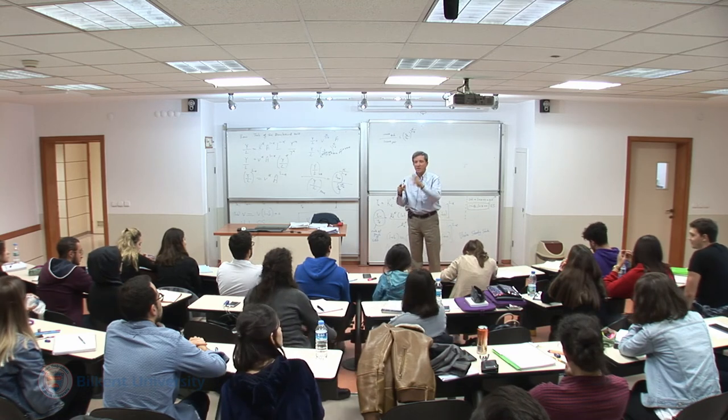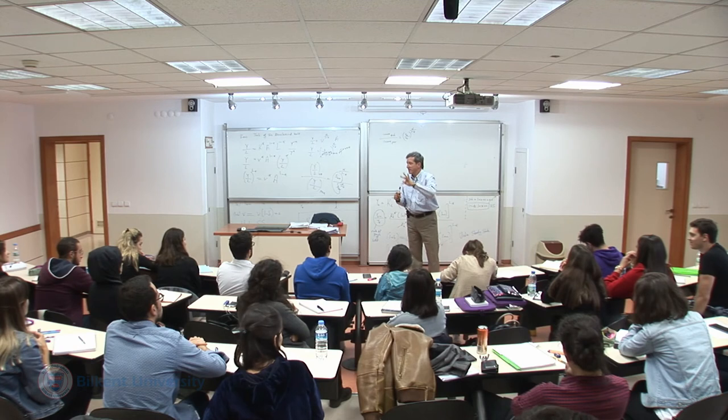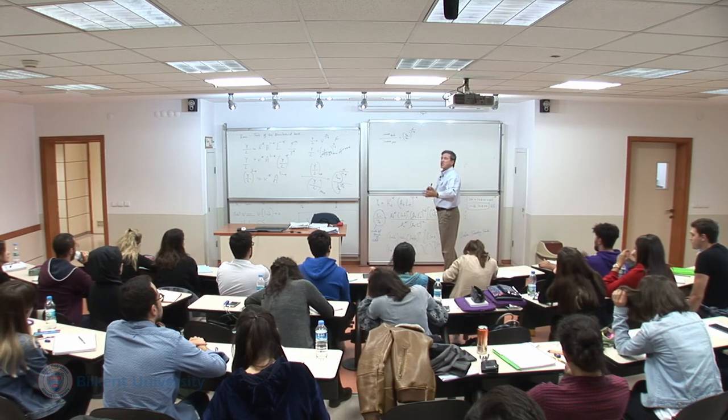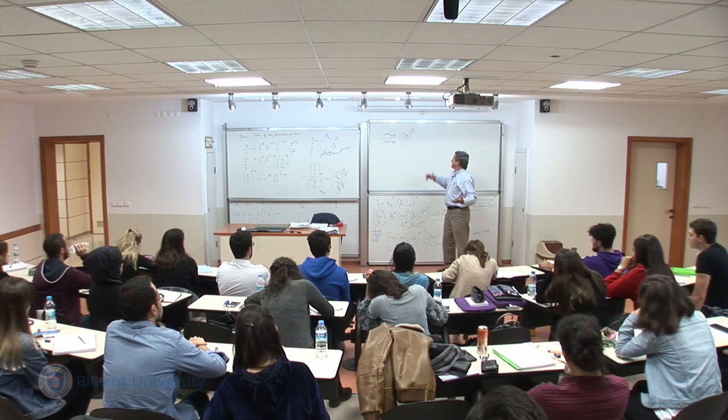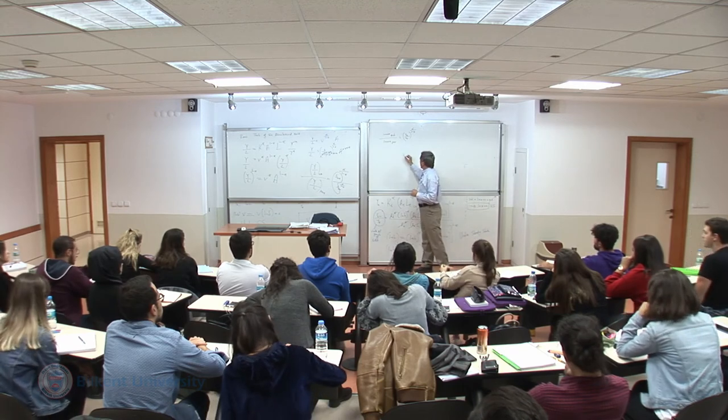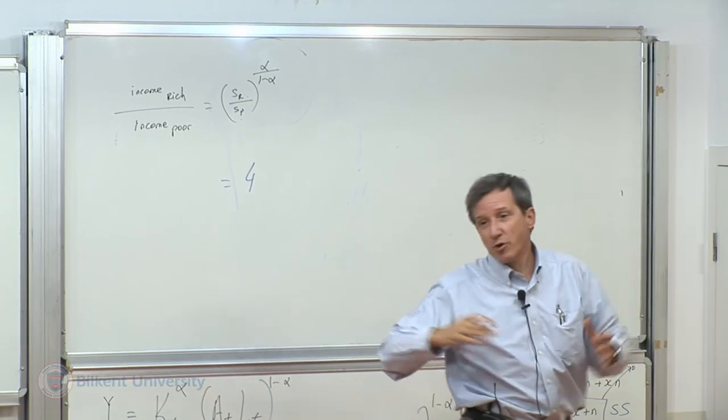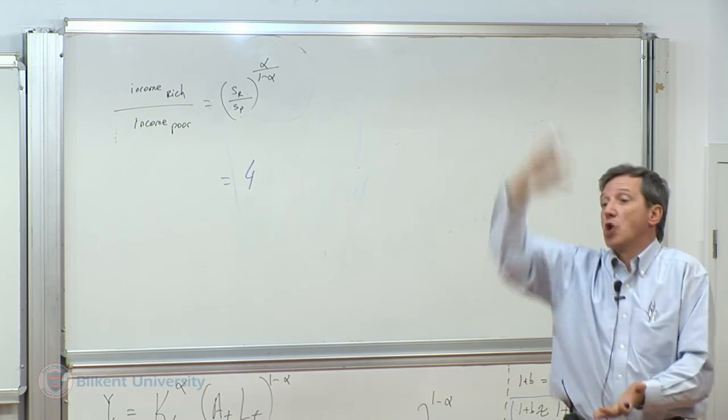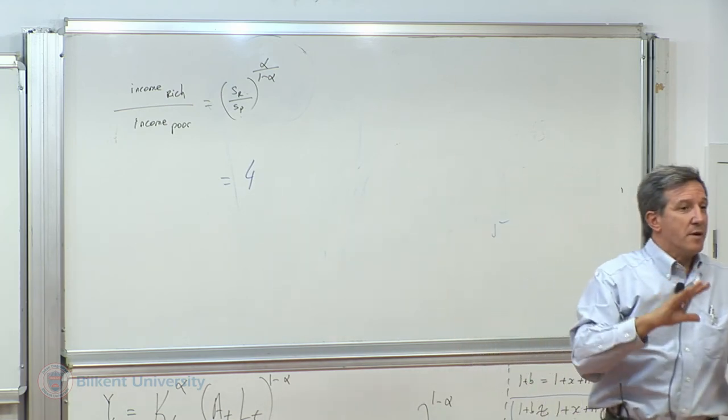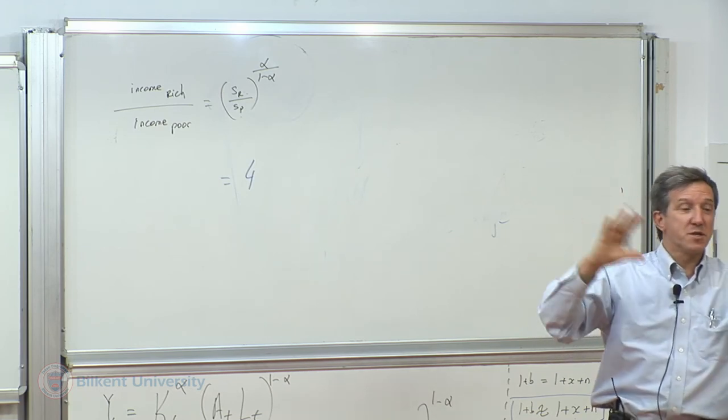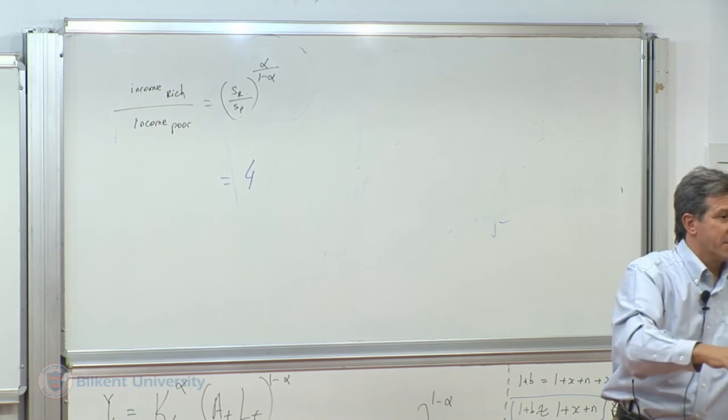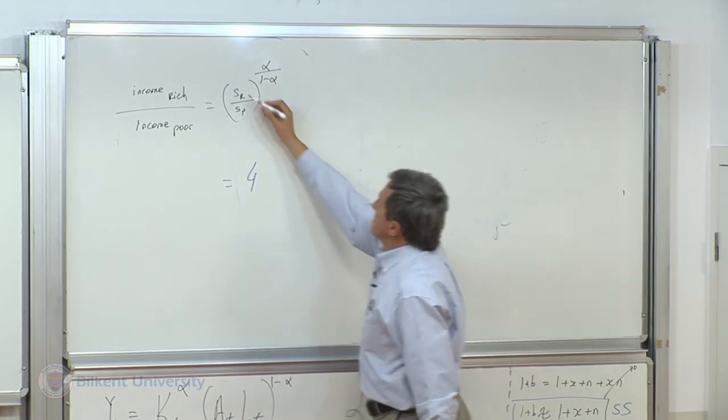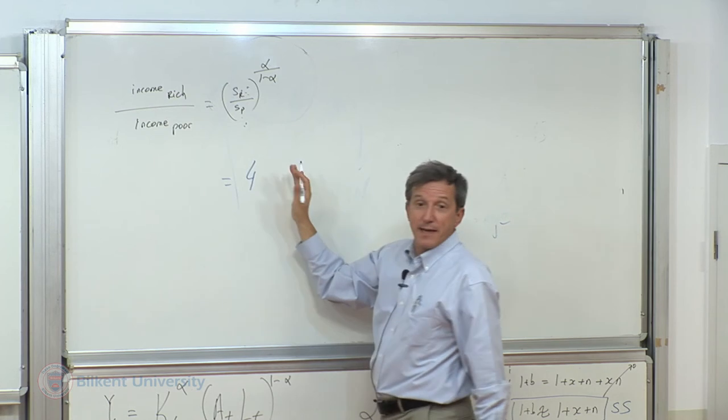But what all of these translate in saving rates differences, typically it is a factor of four. I mean, you cannot save everything. You have to consume. So there is an upper limit. It is not 30 times. It's about the highest saving economies save four times as much as the less saving countries. That's a typical data, and we are going to work on this. So this gap, SR to SP, is four.